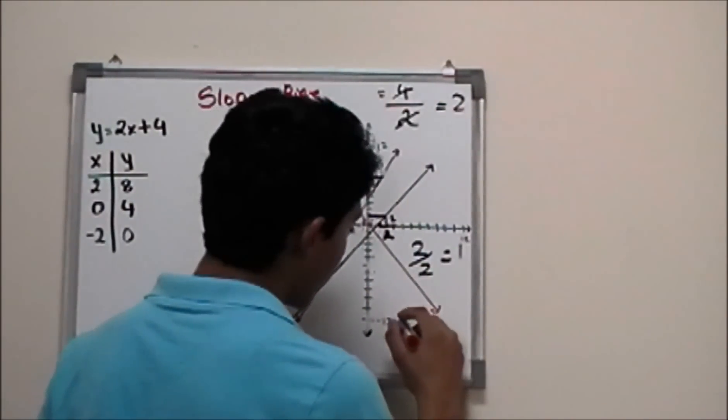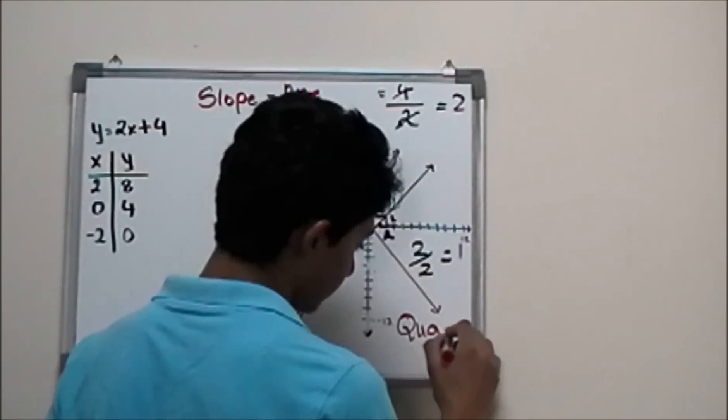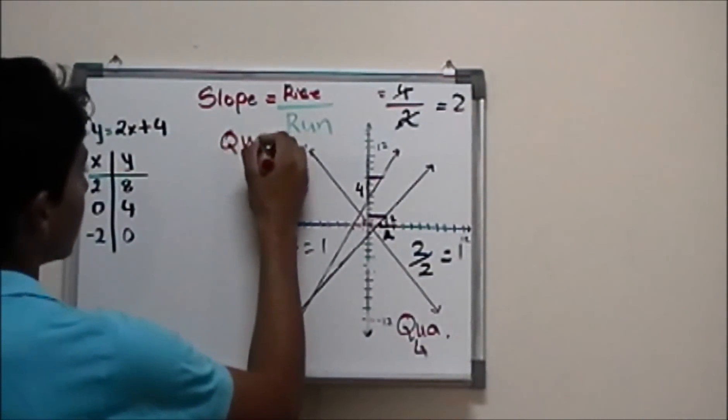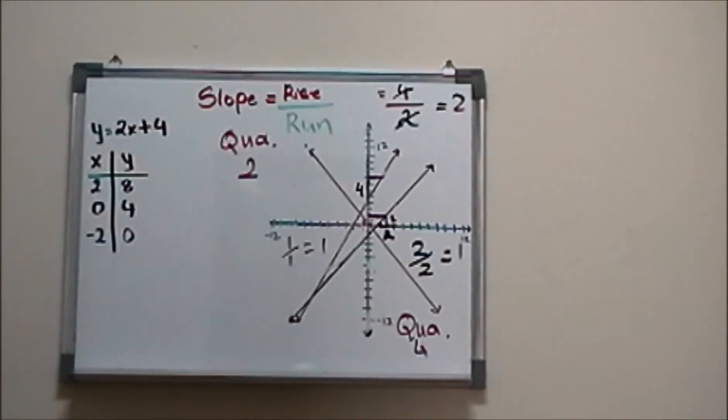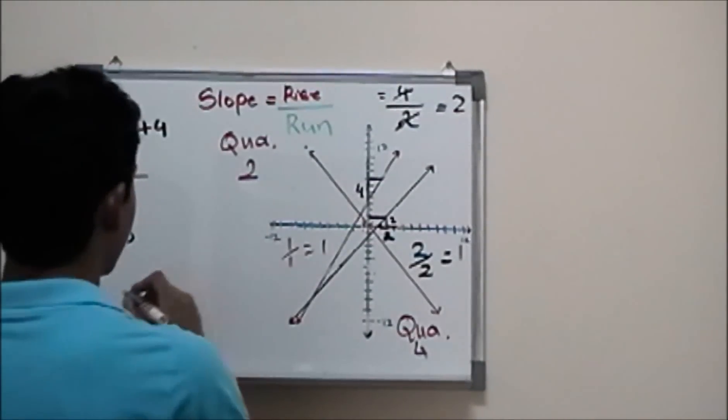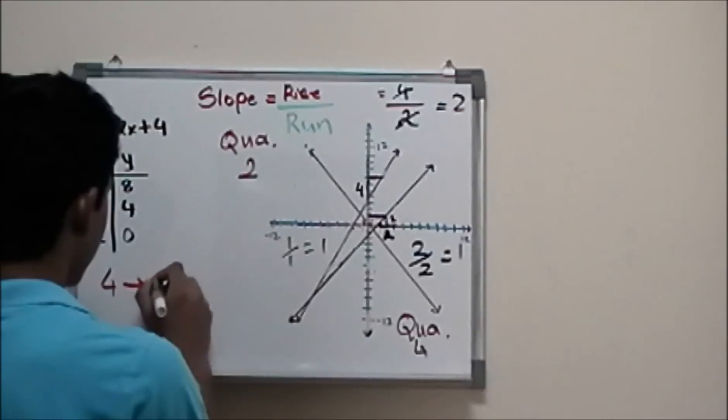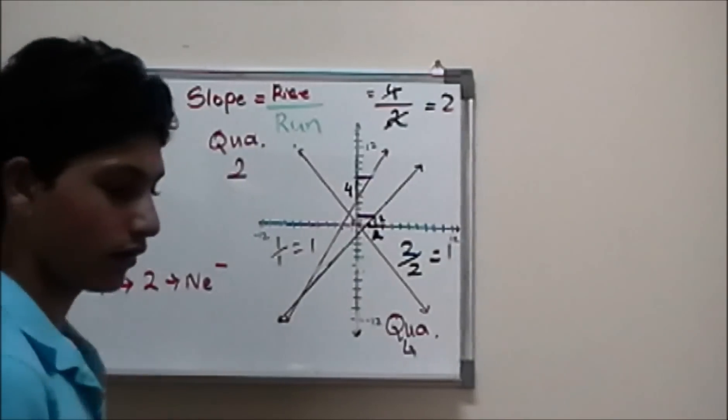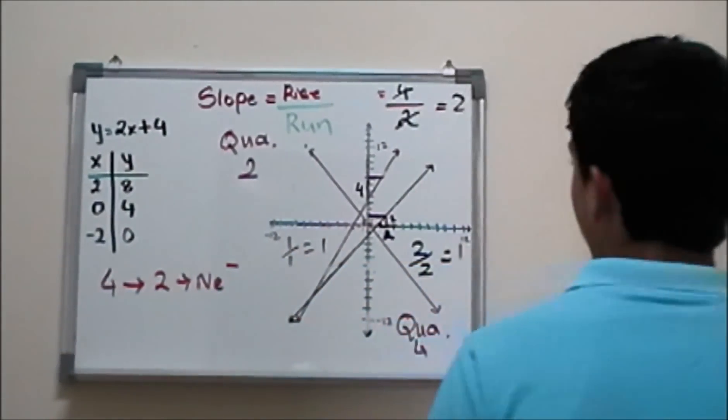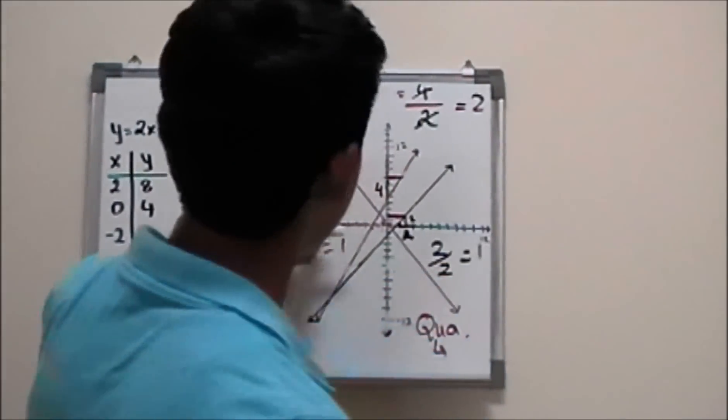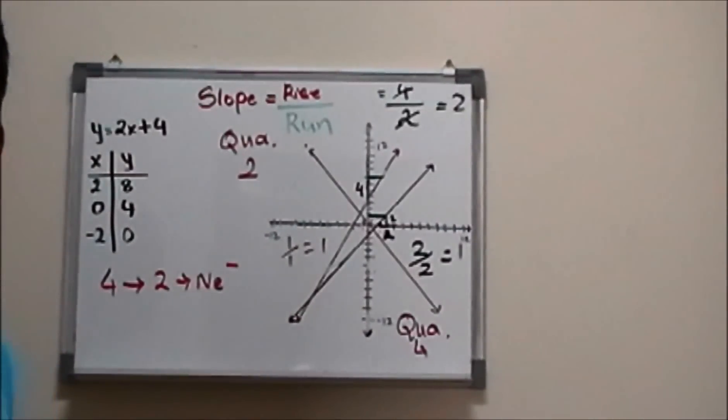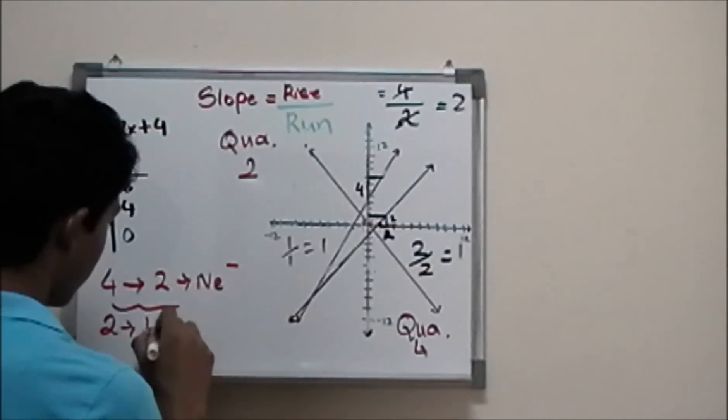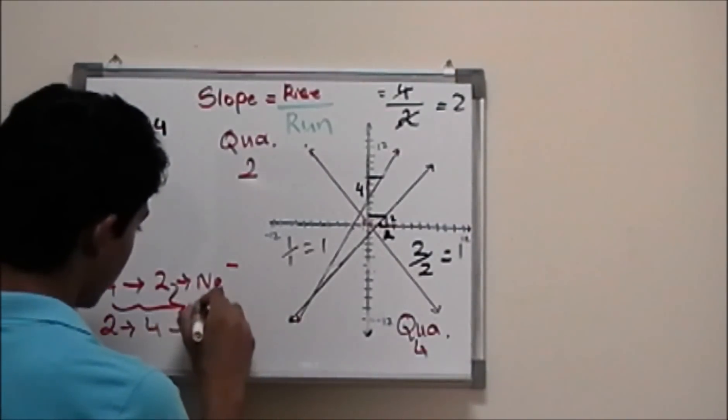So if a line from quadrant four goes to quadrant two, it's always, always, always a negative. Four to two is negative. Or if it's going from quadrant two to quadrant four, either way it's negative. We can flip it, two to four, it's still negative.